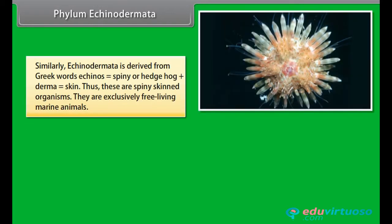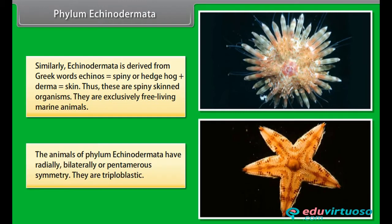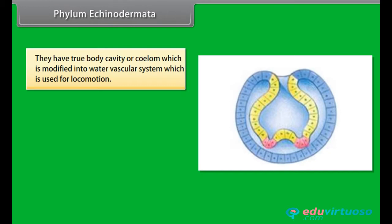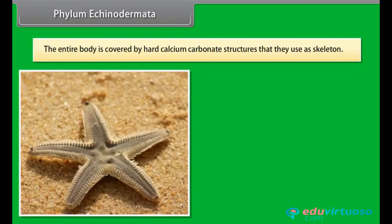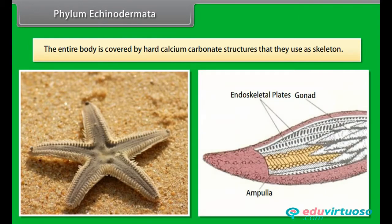Phylum Echinodermata is derived from Greek words echinose, meaning spiny or hedgehog, plus derma, meaning skin. Thus these are spiny-skinned organisms. They are exclusively free-living marine animals. The animals of phylum Echinodermata have radially, bilaterally, or pentamerous symmetry. They are triploblastic. They have a true body cavity, or coelom, which is modified into a water vascular system used for locomotion. Their body has oral and aboral surfaces. The oral surface has five radial areas called ambulacra. The entire body is covered by hard calcium carbonate structures used as skeleton.